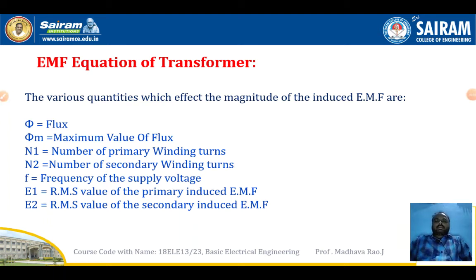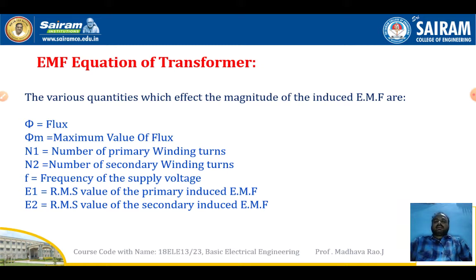In this video we will discuss the EMF equation of transformer. Before deriving it, we assume some notations: φ is flux, φm is maximum value of flux measured in webers, N1 is number of primary winding turns, N2 is number of secondary winding turns, f is frequency of supply voltage in hertz, E1 is RMS value of primary induced EMF in volts, and E2 is RMS value of secondary induced EMF in volts.